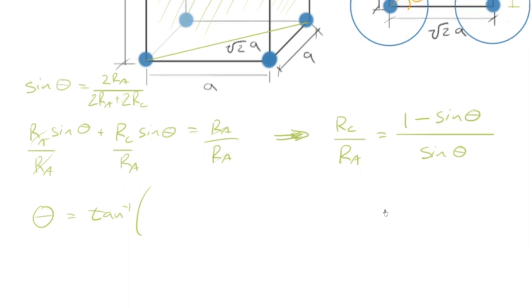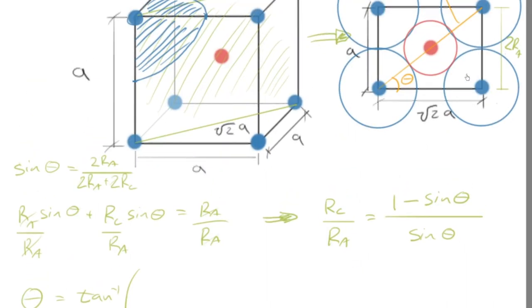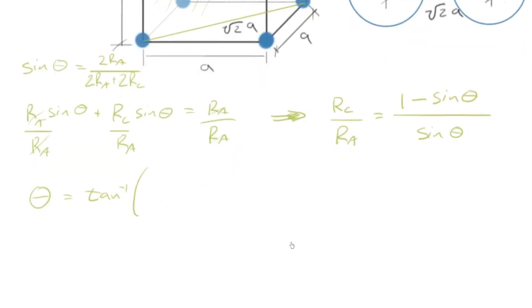Well, theta is equal to, we can just take theta equals tan inverse of, I'll show you the angle over here, right? It was opposite over adjacent. So that's going to be a, or one over root two.